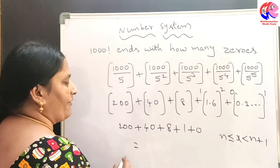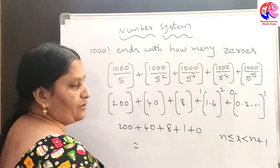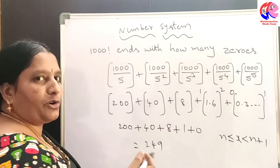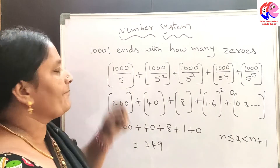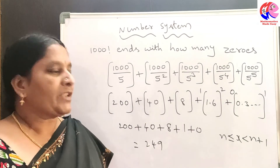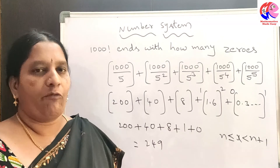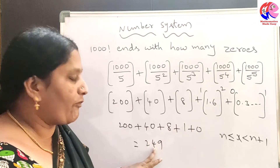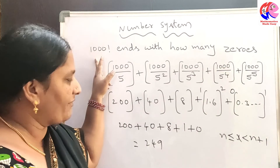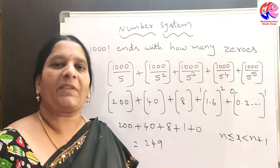So the highest power of 5 equals 200 + 40 = 240, then 240 + 8 = 248, then 248 + 1 = 249. Since 10 = 2 × 5, each pair of one 2 and one 5 contributes one trailing zero. Therefore, 1000 factorial ends with 249 zeros. Thank you very much.